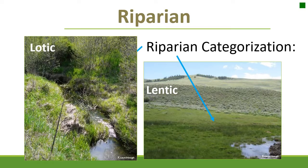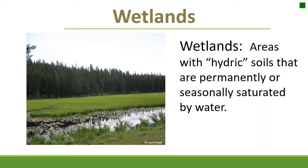Here you have the two different types of riparian zones. One being Lotic, which are associated with moving streams and waters, and the other is Lentic, which is more of your still water — kind of like marshes and emergent wetlands. Wetlands are areas with hydric soils that are permanently or seasonally saturated by water.